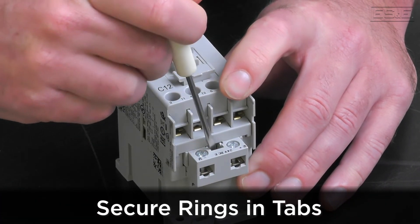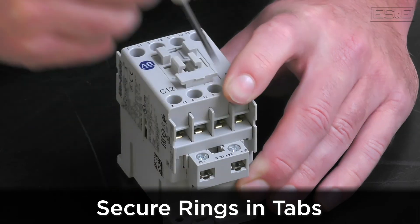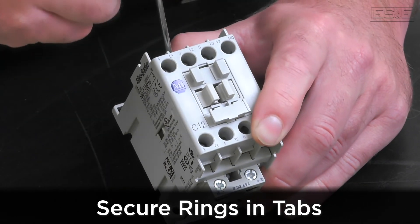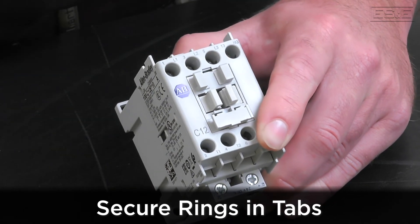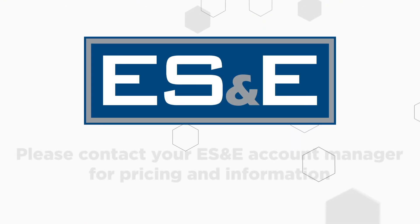Make sure to securely latch the rings that you removed on the sides that hold the top and bottom portions together. That concludes the coil rotation process. Thanks for watching, and if you have questions or need further assistance, please reach out to your local ES&E Account Manager or Automation Specialist.